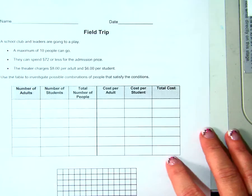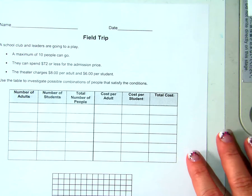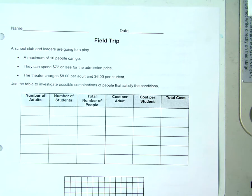We're going on a field trip. Pretend field trip. We can take 10 people maximum, and we can spend $72 or less for the admission price, but the theater charges $8 for adults and $6 per student.